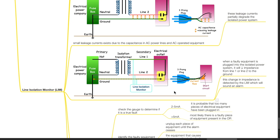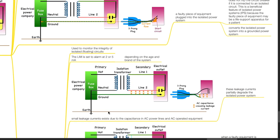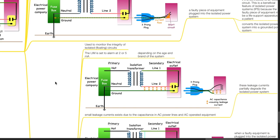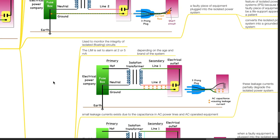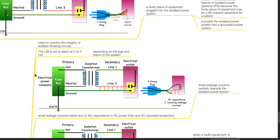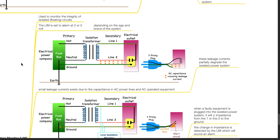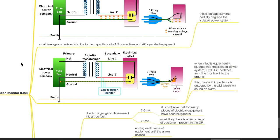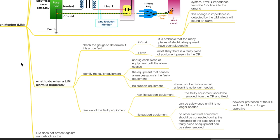Line Isolation Monitor is used to monitor the integrity of isolated floating circuits. The LIM is set to alarm at 2 or 5 milliamps depending on the age and brand of the system. Small leakage currents exist due to capacitance in AC power lines and AC operated equipment. These leakage currents partially degrade the isolated power system. When faulty equipment is plugged into the isolated power system, it will reduce the impedance from line 1 or line 2 to the ground. This change in impedance is detected by the LIM which will sound an alarm.